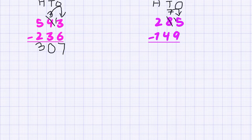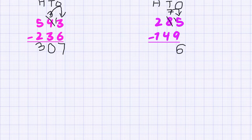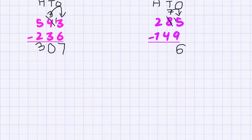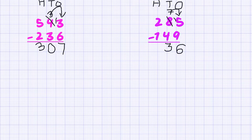Now let's work on our ones calculation: 15 minus 9 is 6. Then we move on to our tens calculation: 7 tens minus 4 tens — 7 minus 4 is 3. And we move on to our hundreds calculation: 200 minus 100 is 1. So we have our answer as 136.